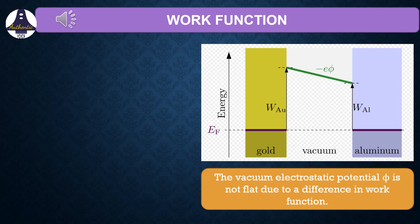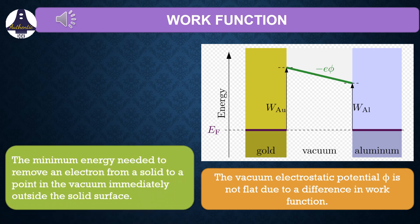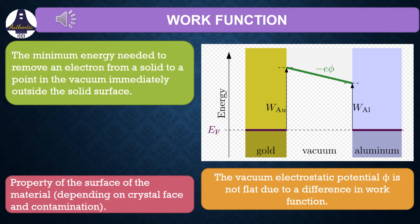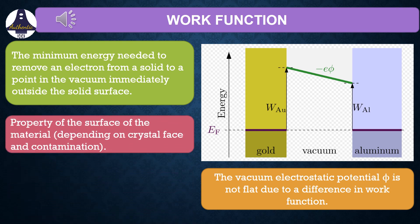To understand the working principle of shadow effect energy generator, we should know about the work function. Now what is work function? It is the minimum energy needed to remove an electron from a solid to a point in the vacuum immediately outside the solid surface. It is the property of the surface of the material.